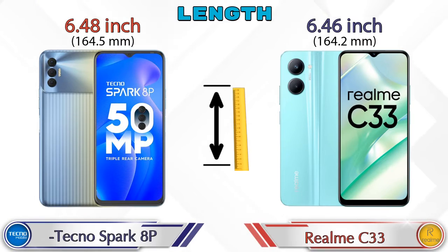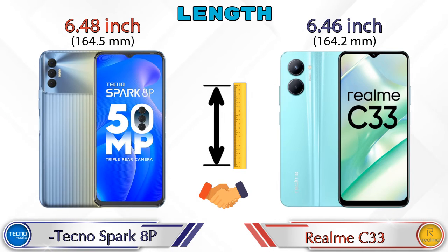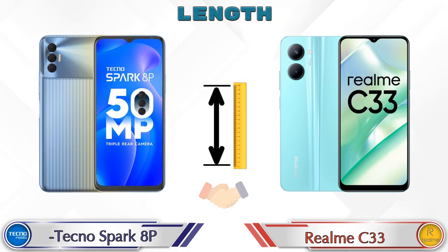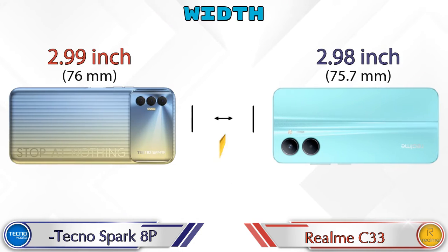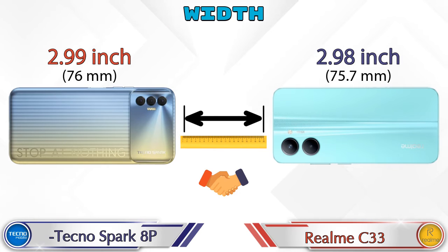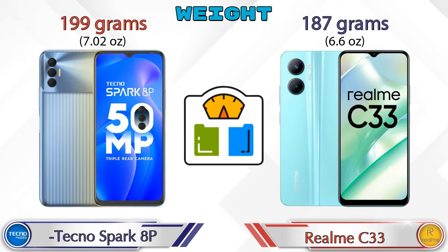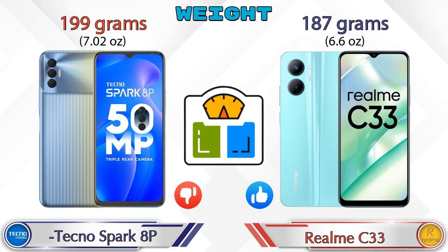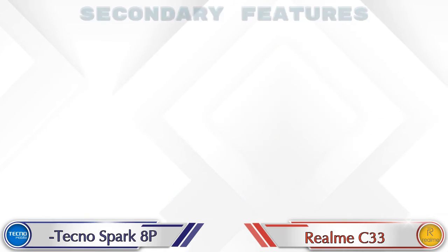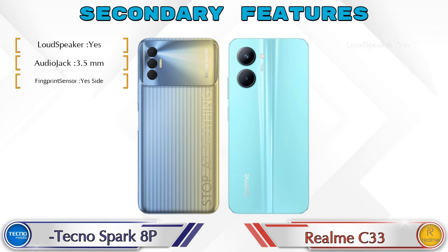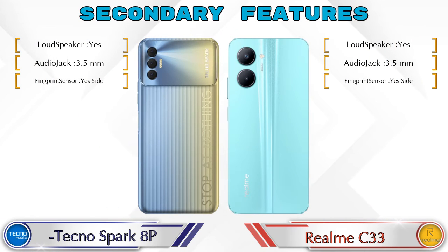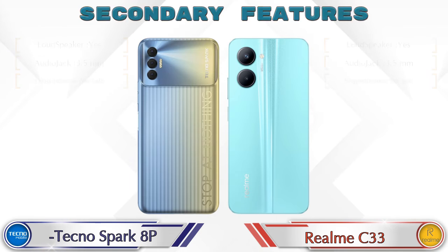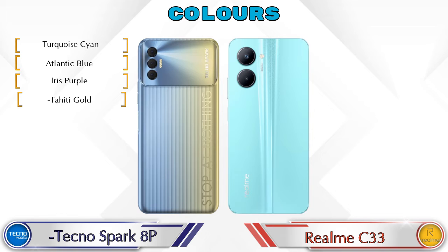Talking about dimensions: the length of Spark 8P is 6.48 inches and Realme C33 is 6.46 inches, which are almost the same. Width in Spark 8P is 2.99 inches and Realme C33 is 2.98 inches, also almost the same. Weight: Spark 8P is 199 grams and Realme C33 is 187 grams.